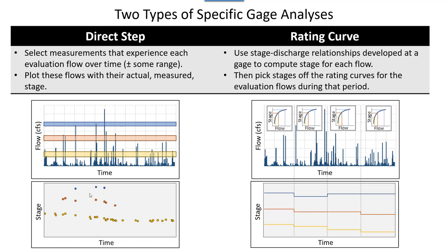Another way is to interrogate the stage curves directly. In this fictional time series, USGS developed four stage-flow relationships for different time periods. Instead of mining historical results for flows close to your target flow, you take the flows you're interested in, compute a stage from the rating curve, and plot that stage across the entire period where that rating curve was representative, resulting in step functions. Both approaches tell the story — they have pros and cons — and you'll tend to see both methods used.